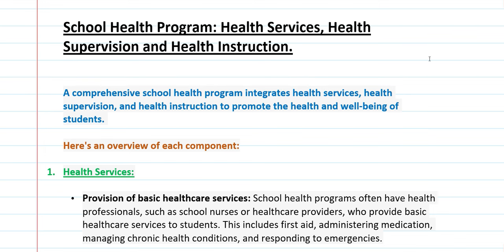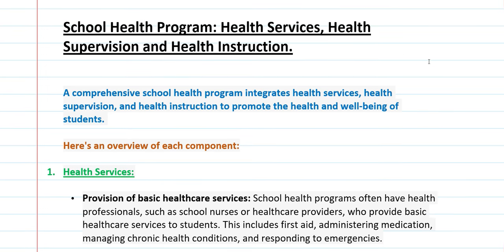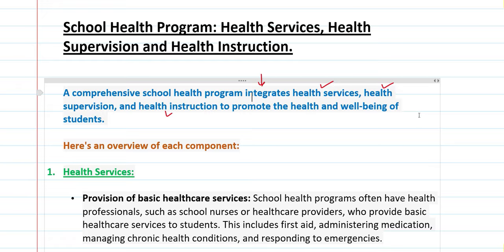Hello everyone. In this video we will study about school health program — health services, health supervision, and health instructions. A comprehensive school health program is found in three things: health services, health supervision, and health instruction. These three things are integrated into this. Now we are going to study about every component.